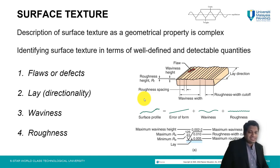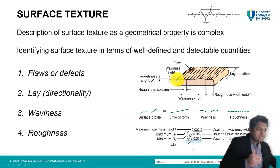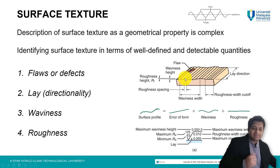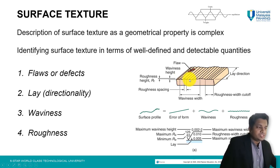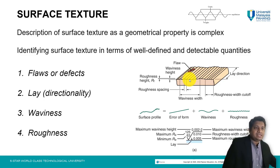Roughness is basically defined as closely spaced and irregular deviations on a small scale, and it is expressed in terms of height, width, and the distance along the surface. These are the four most important things that need to be defined when we talk about surface texture. In the next section we are going to look at how surface roughness is defined, as it is one of the most important characteristics.